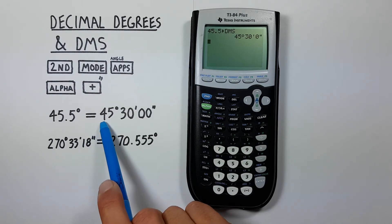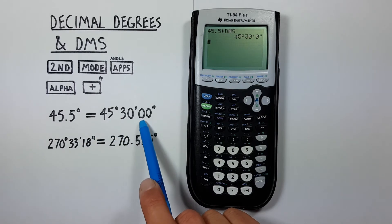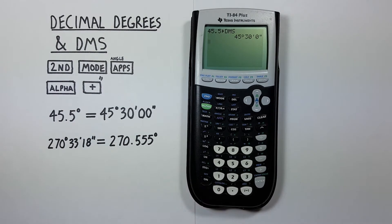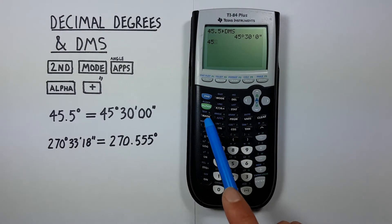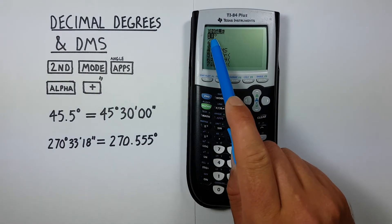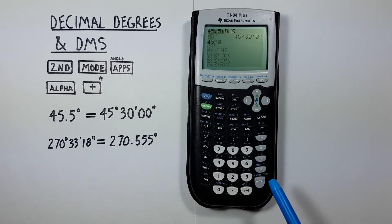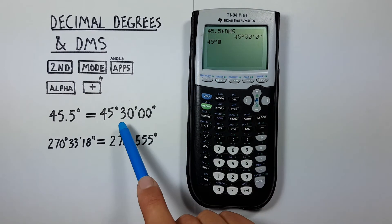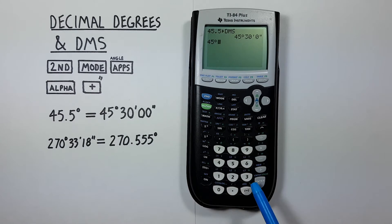What if we're given 45 degrees, 30 minutes, 0 seconds, and want to convert that to decimal degrees? Well, to do that, we start by entering our degrees, 45, and then go to our angle menu. And here we see the first option is the degree symbol. So we'll select that. There we go. We have 45 degrees. Next we have 30 minutes. So we enter the 30.